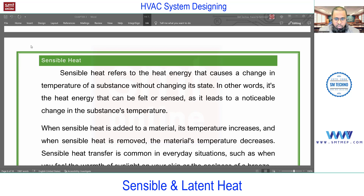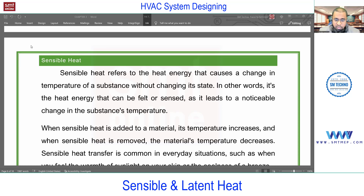When we deal with heat gain through these different sources, you must know that heat gain is either only sensible or sensible plus latent. According to that we have a list. For example, heat gain through wall is only sensible. Similarly, heat gain through ventilation is sensible plus latent because moisture is also involved. Heat gain through people is also sensible plus latent.